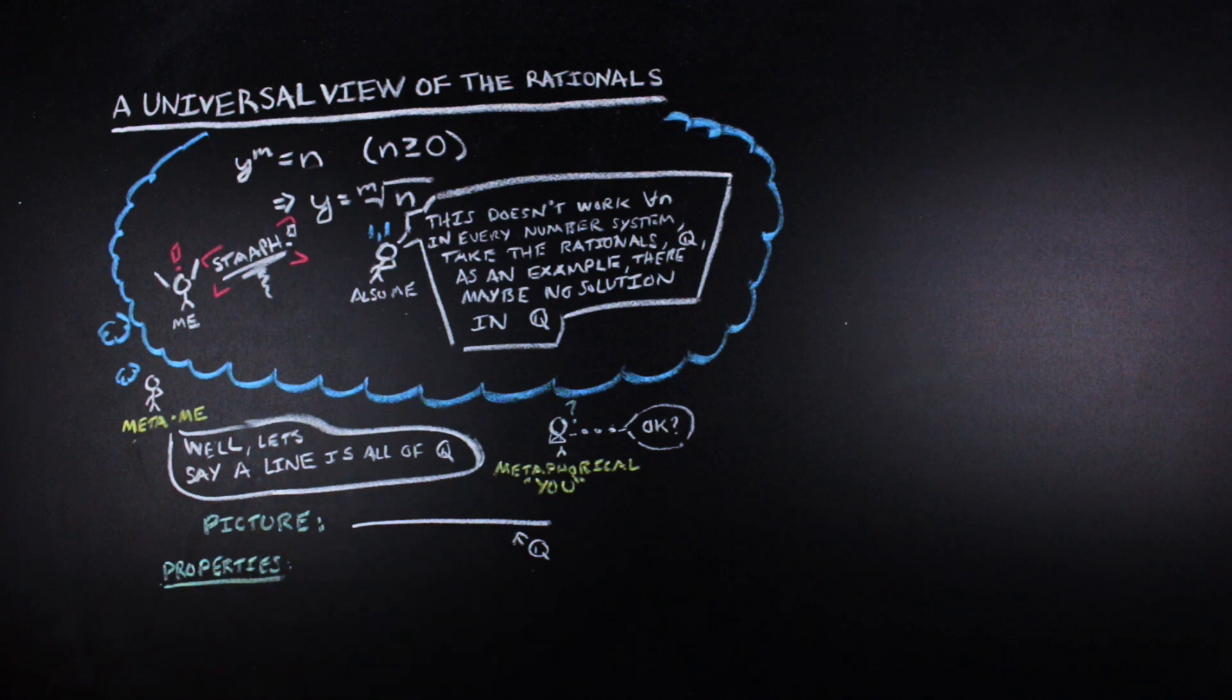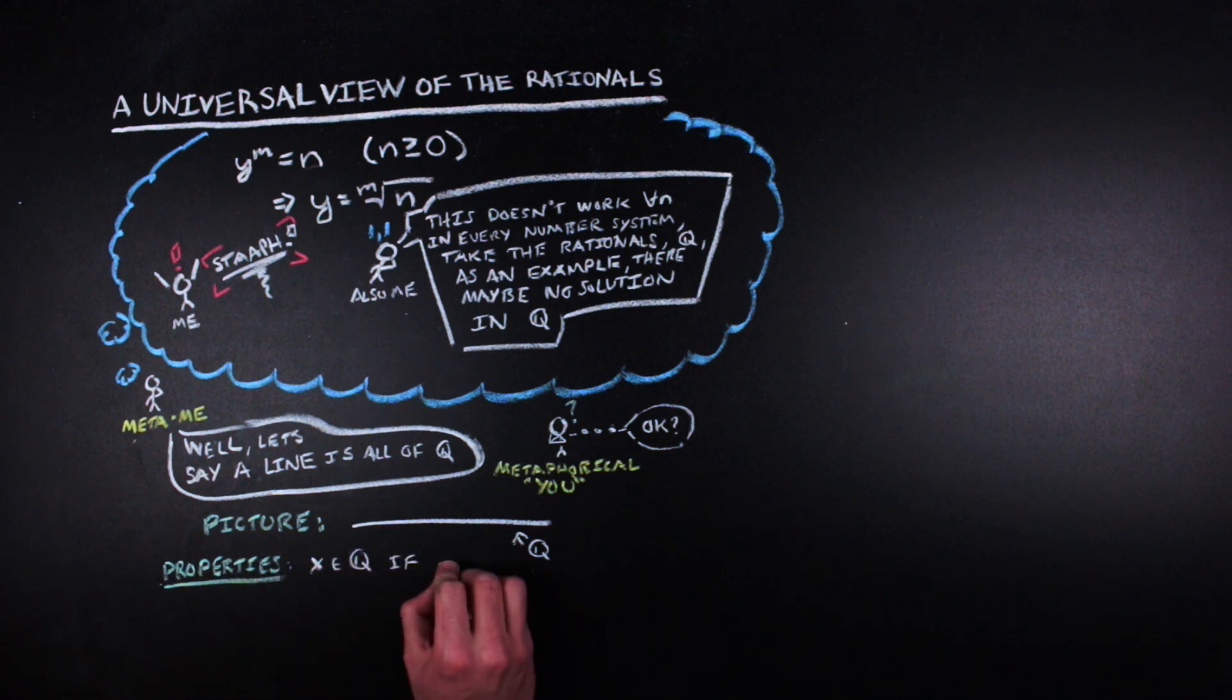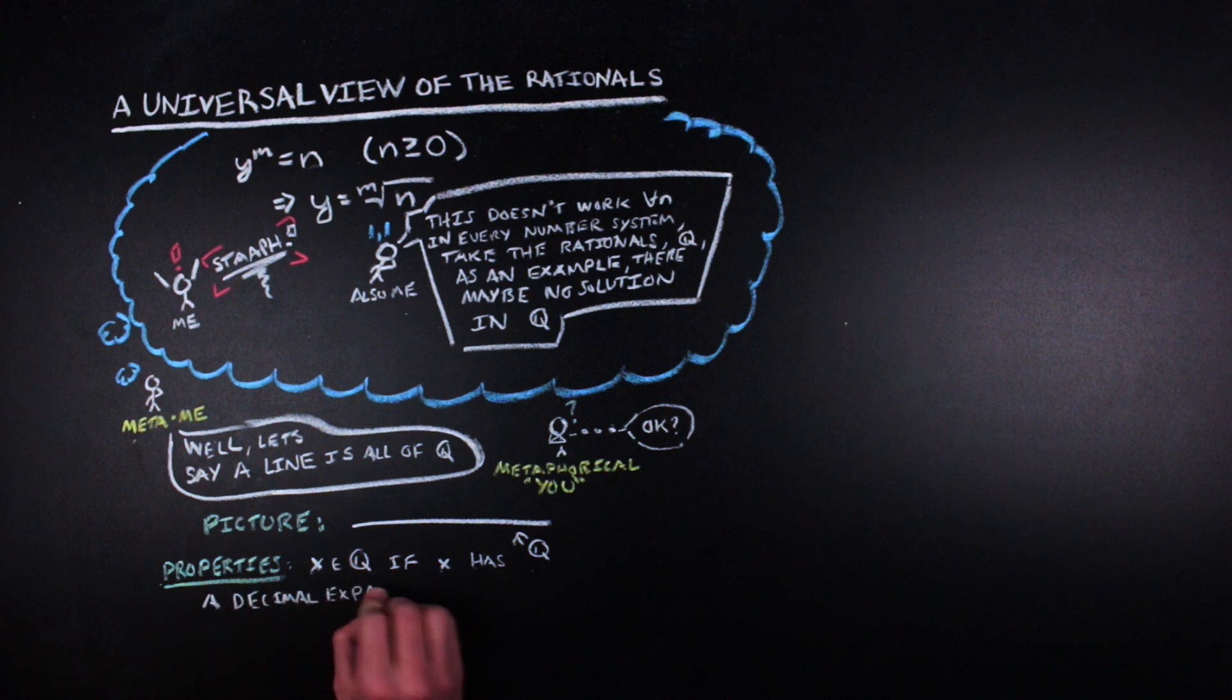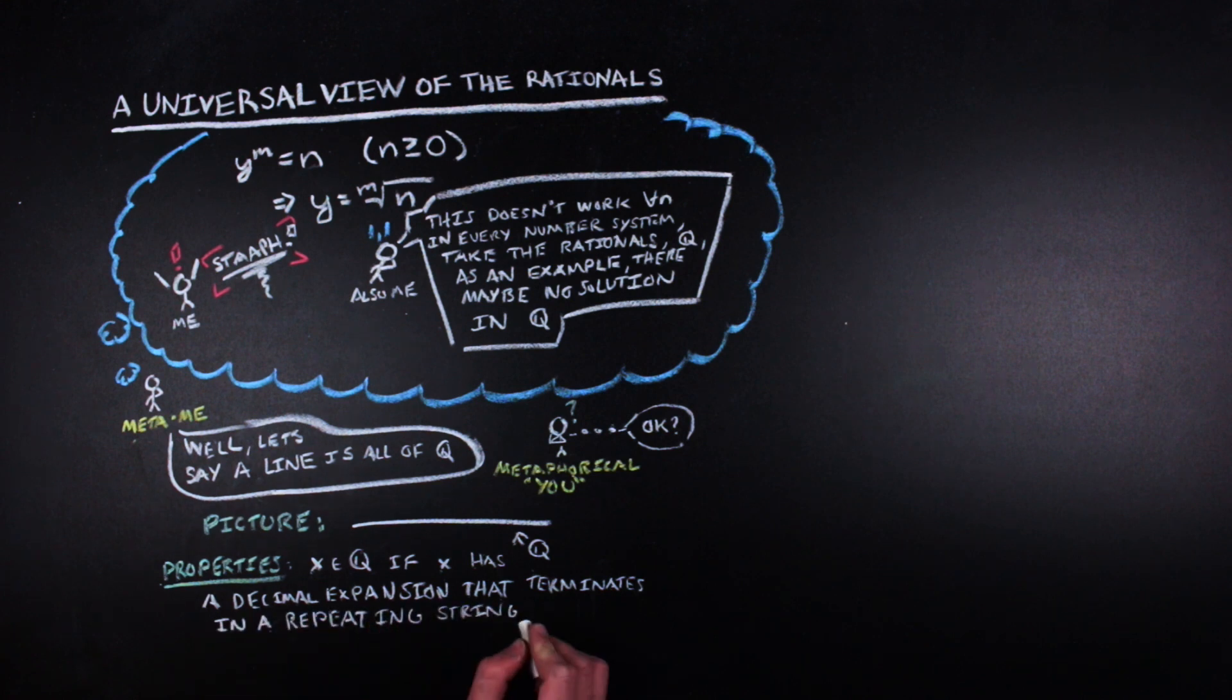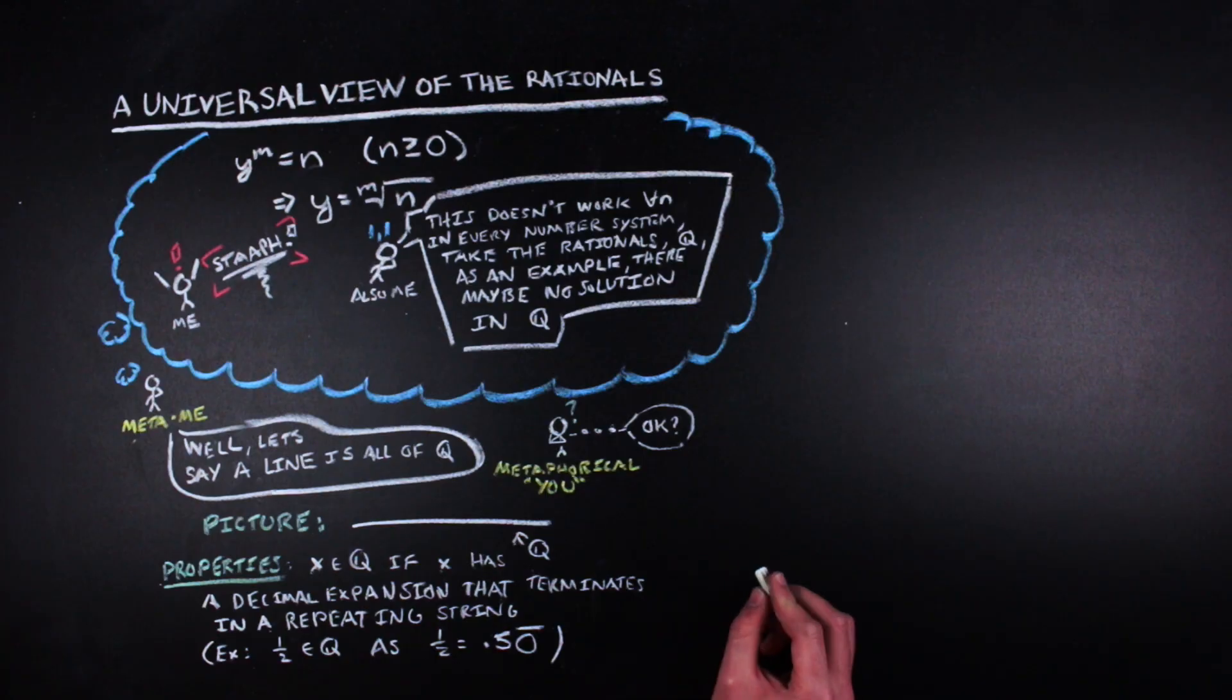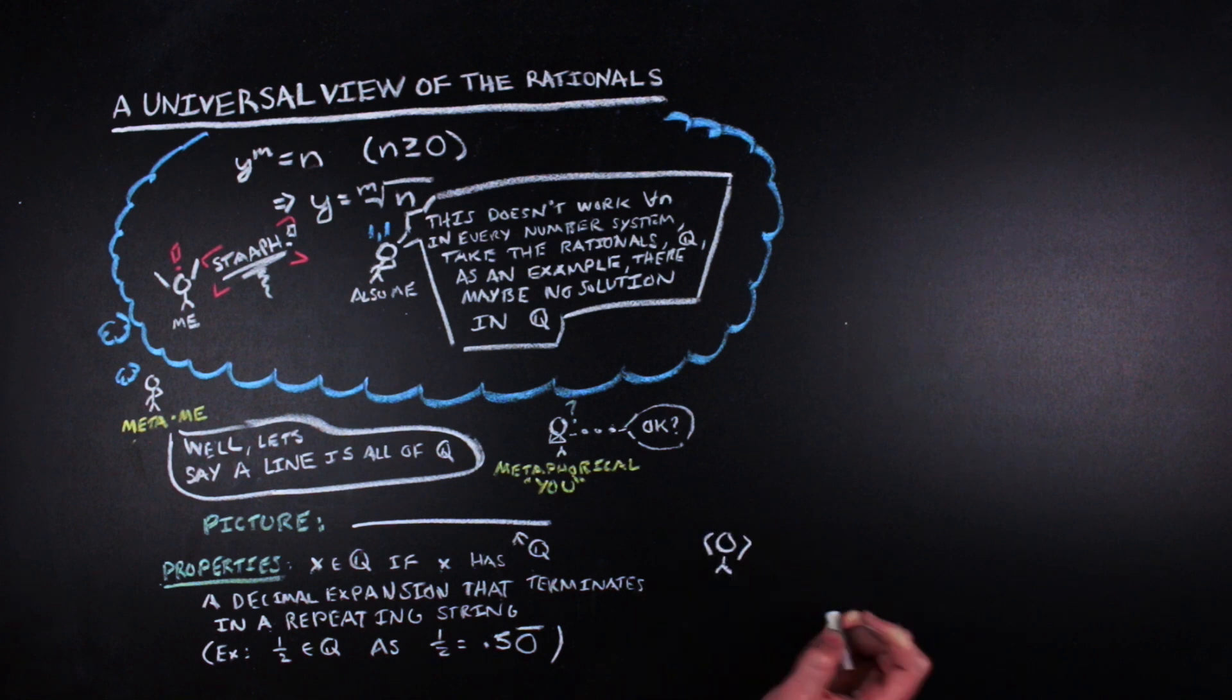So, if you're living in a world where all you think exists are the rational numbers, then you might be tempted to say that we could just take the rational numbers to be a line. And we're going to say that that line is all of the rational numbers, and they still have all the properties that we generally agree on them having. So, I mean that x is a rational number if the decimal expansion of x terminates in a repeating string. So, for instance, if one-half was your rational number, then one-half is 0.50 repeating. And so, we'll continue to think about rational numbers this way.